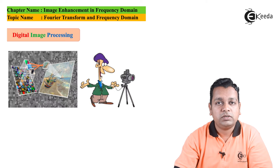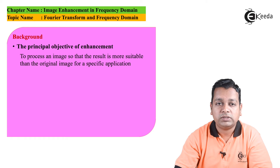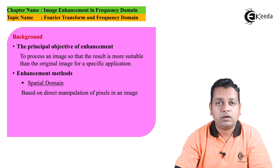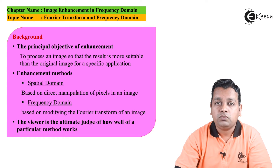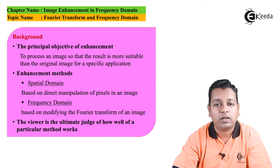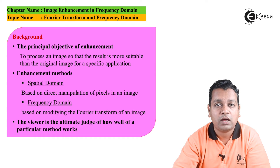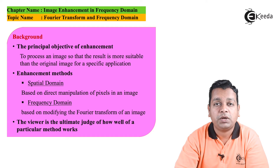We begin with the principal objective of enhancement: to process an image so that the result is more suitable than the original image for a specific application. Enhancement methods are of two types. The first is the spatial domain, based on direct manipulation of pixel values. The second, addressed in this chapter, is the frequency domain, based on modifying the Fourier transform of the image. The viewer is the ultimate judge — there is no direct objective evaluation for image enhancement methods, whether spatial or frequency domain type. We judge them by visualization, based on human visual perception.